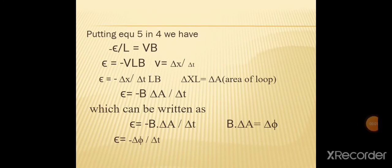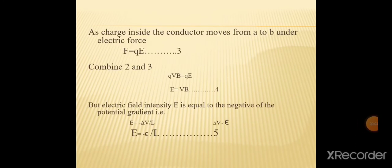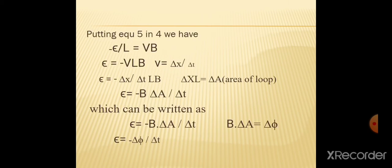Equation 5 کو equation 4 میں put کریں: equation 4 تھی E = vB، اور E = −e/l۔ تو −e/l = vB، جس سے e = −vBl آئے گا۔ یہاں v velocity ہے جس سے conductor move ہو رہا ہے، اور v = Δx/Δt۔ تو e = −(Δx/Δt)·l·B۔